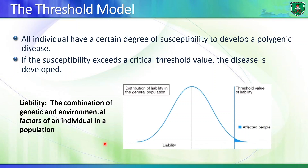The inheritance of multifactorial conditions can be explained by the threshold model. The distribution of liability follows a bell-shaped normal distribution. In order for individuals to have a phenotype, they must accumulate a number of factors — not only genes but also environmental factors. There is a threshold: a line dividing people with the condition from those without.